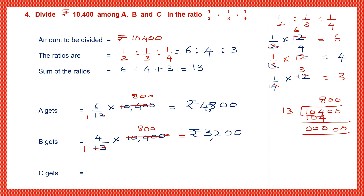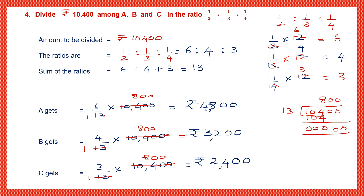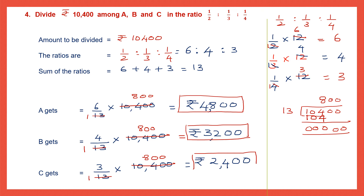C gets the third term 3 by 13 into 10,400. Cancel: 13 into 800. Multiply 3 into 800 — 3 eights are 24, add two zeros — C gets 2,400 rupees. So A gets 4,800 rupees, B gets 3,200 rupees, and C gets 2,400 rupees. You can check by adding all three — it should give you 10,400.